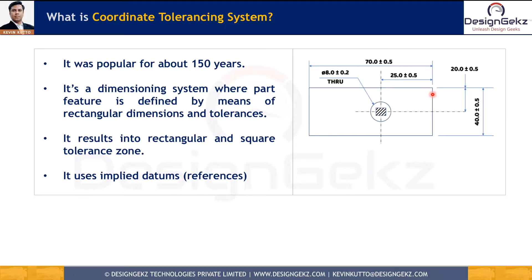If this system was so simple, what was the need to use GD&T? It's because the coordinate tolerancing system has some major flaws, especially in mass production. Let's understand them and also get clarity about how GD&T solves them.